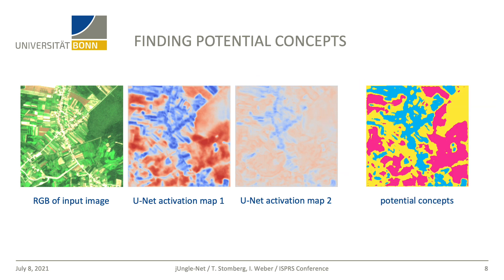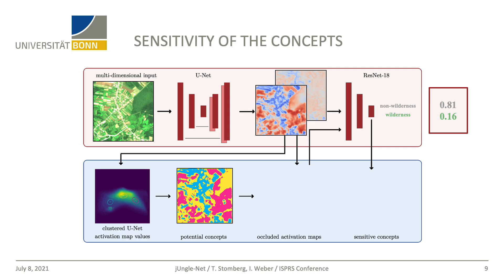We call these three clusters potential concepts. For example, you can see that settlements are mainly assigned to the blue concept. One could now assume that the blue concept is connected to the non-wilderness class, but we need to find out if GinoNet also treats the blue concept as non-wild. Starting from the beginning, we pass our input image into the UNet to get activation maps, then pass these activation maps to the ResNet to get classification scores. For this sample, JungleNet predicts a value of 0.8 for non-wilderness and 0.16 for wilderness — a clear decision for non-wilderness.